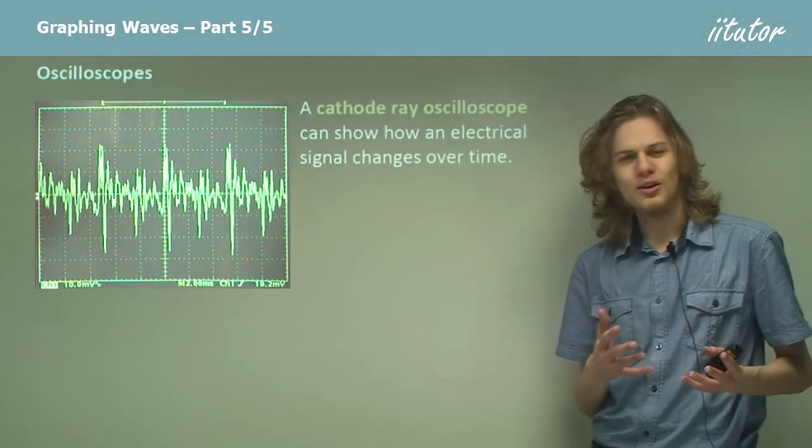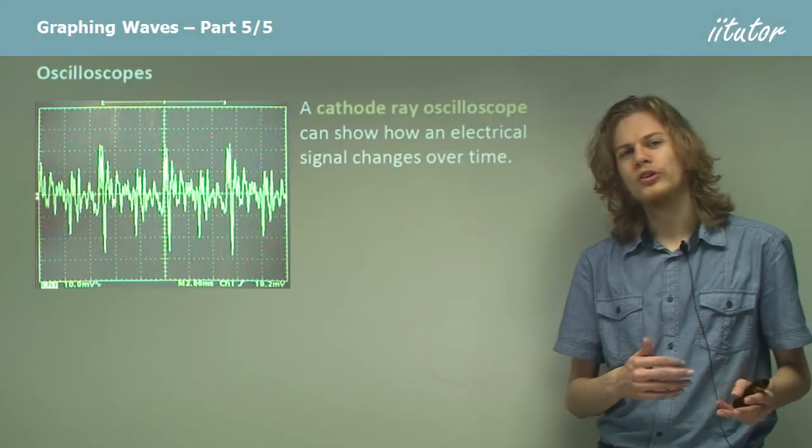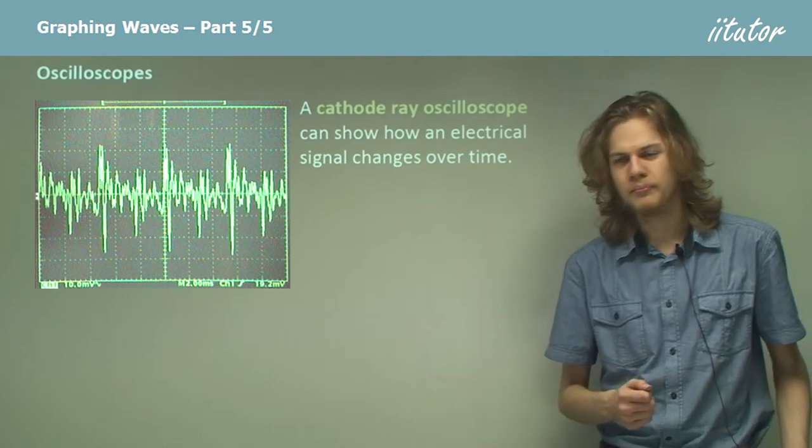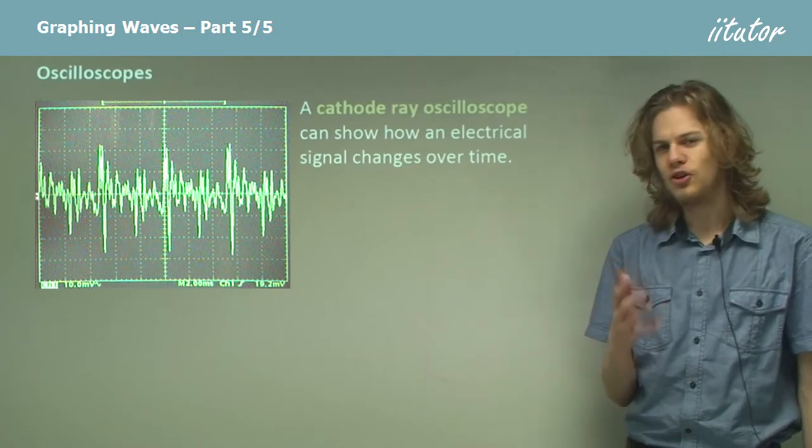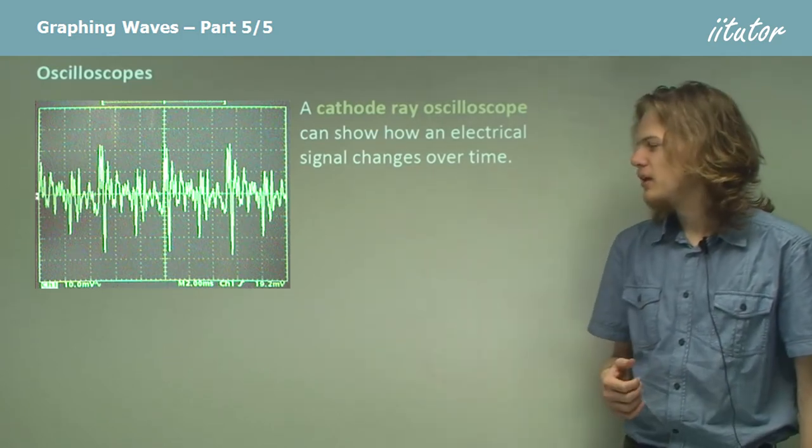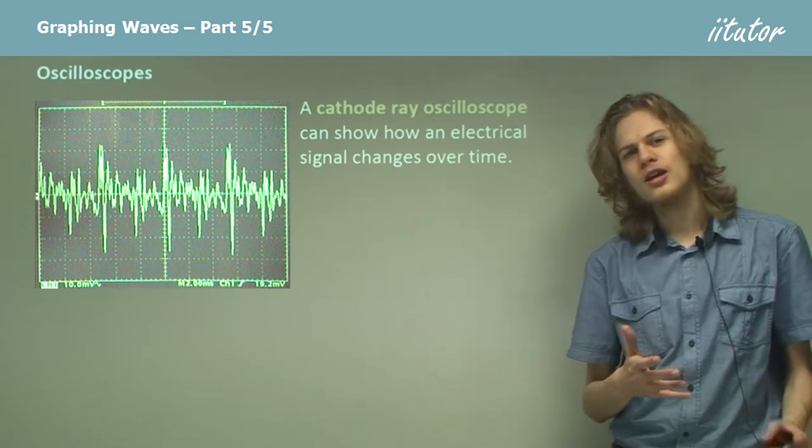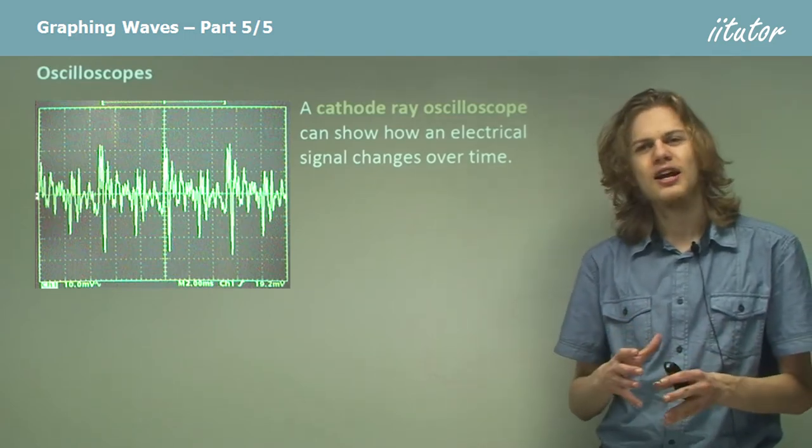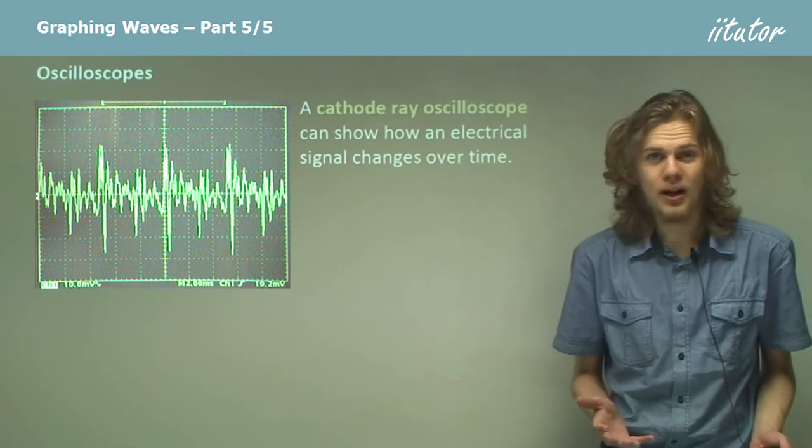Now there's a device that we can use to measure waves called a cathode ray oscilloscope. The screen of such an oscilloscope looks something like this. And what this does, it shows how an electrical signal changes over time, and so how do we apply this to waves?